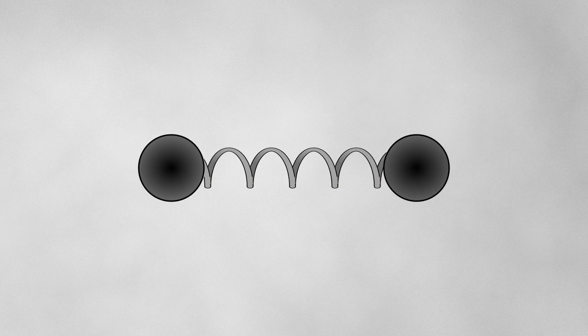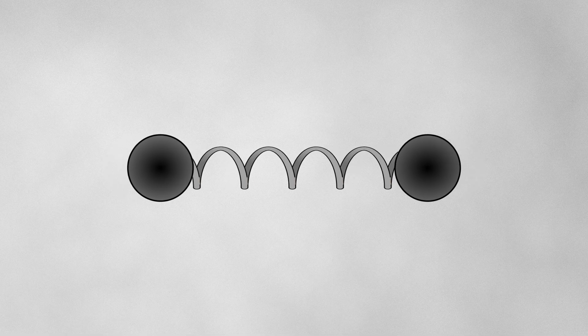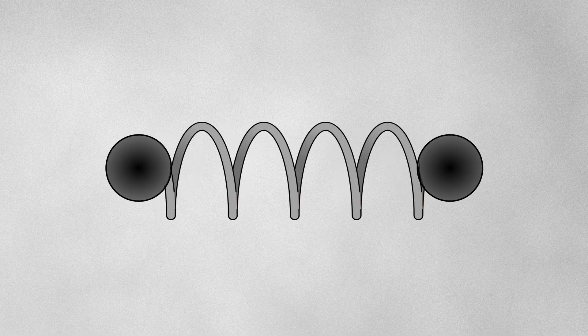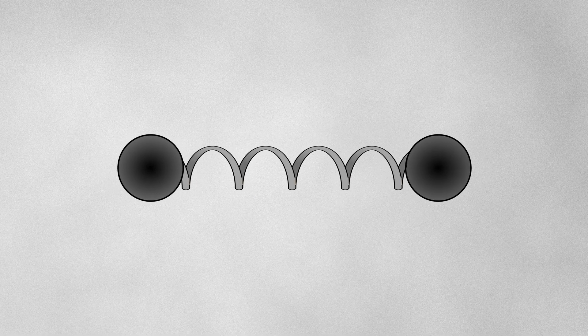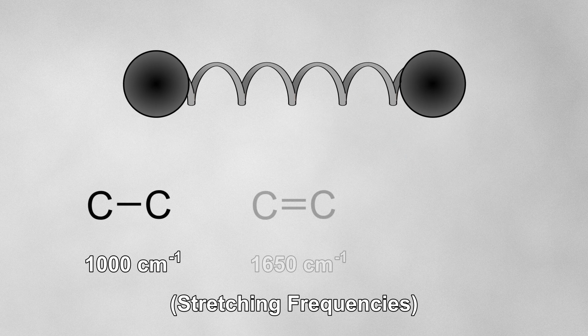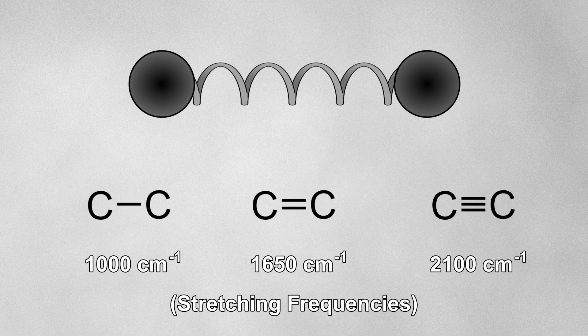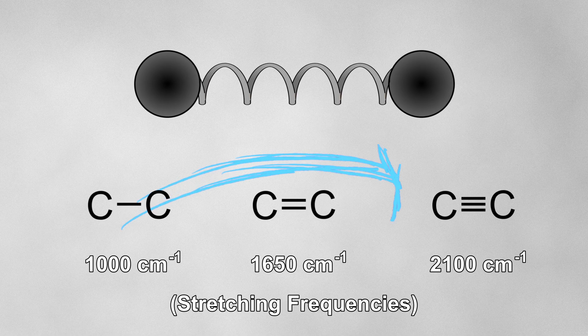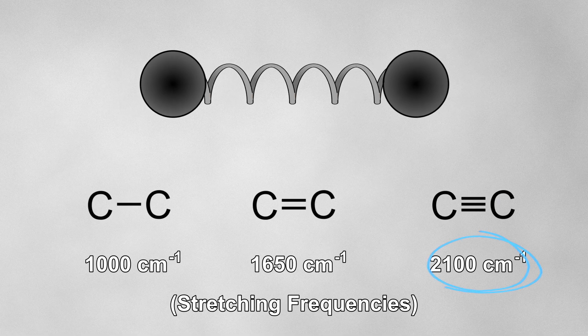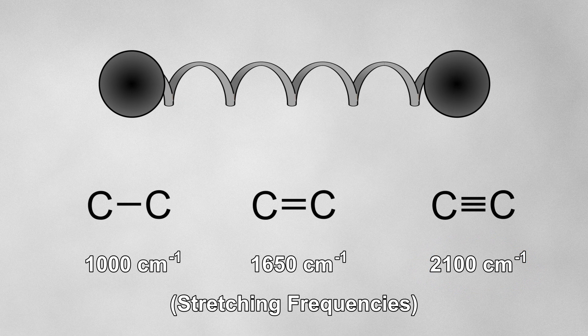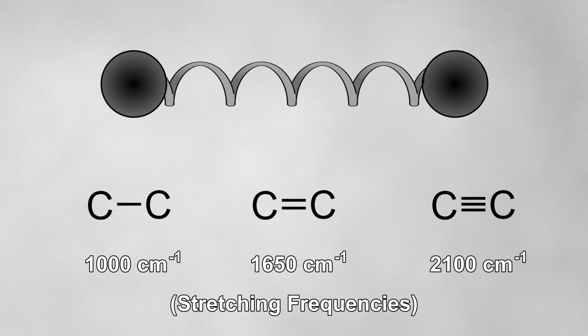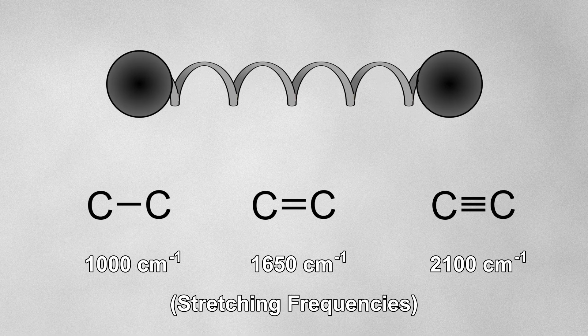The second factor that affects the frequency of a bond vibration is the strength of the bond. We can think of a stronger bond like a stiffer spring, which will vibrate faster than a looser spring. We can see this in action if we compare the IR absorptions for a carbon-carbon single bond, double bond, and triple bond. Here, the masses of the atoms are constant, but the strength of the bond varies. The stronger the bond, the higher the IR frequency. Again, this means that more energy is required to excite the bonds to the more energetic, higher frequency vibrations.